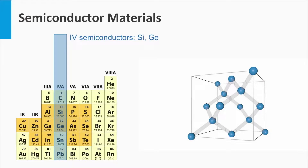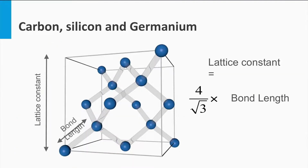Why is carbon not a semiconductor even though it has the same lattice? To answer this question we have to consider the bond length between the atoms — in other words, to what extent the neighboring orbitals forming the molecular orbital are pressed together. The bond length is generally expressed in terms of the lattice constant. In a diamond cubic crystalline lattice, the lattice constant equals four times the silicon-silicon bond length divided by the square root of three.